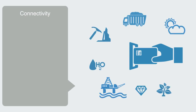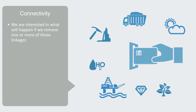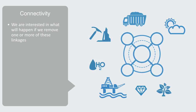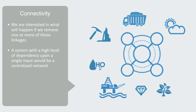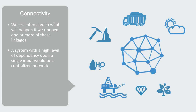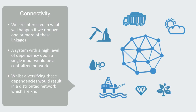We can also think about robustness in terms of connectivity. Can the dynamical system ensure its continued access to sufficient resources required for its functioning? Thus we're interested in what will happen if we remove one or more of these linkages. With the advent of network science, much of this analysis can now be done using network theory. A system with a high level of dependency upon a single input would be a centralized network, whilst diversifying these dependencies would result in a distributed network, which are known to be more robust. Network analysis of infrastructure systems is becoming a key tool and rising topic of research.